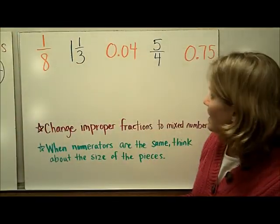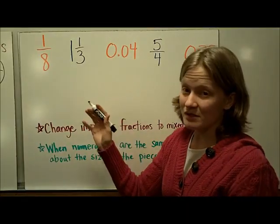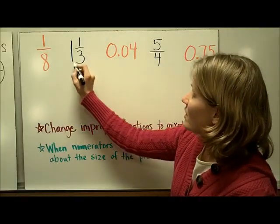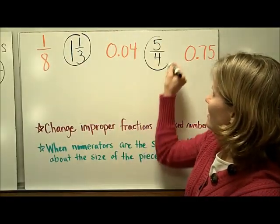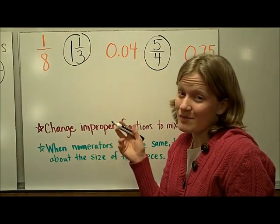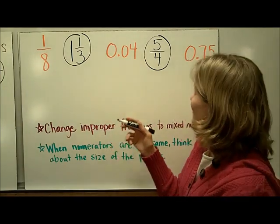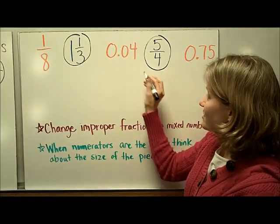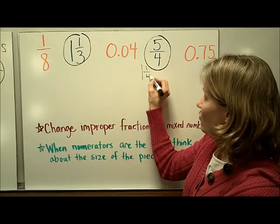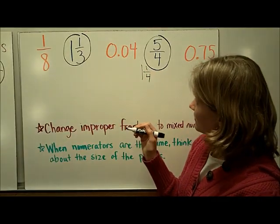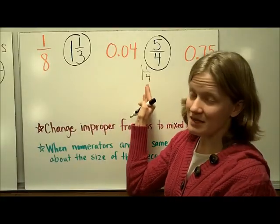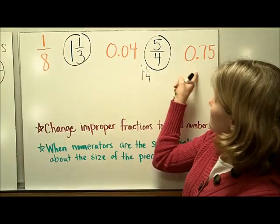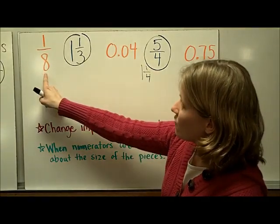Here's another set. I'm going to use the same strategy and look for any fractions or decimals that are bigger than one whole. Here's one and here's one. But this improper fraction is kind of hard to deal with, so I'm going to think about what it is as a mixed number. Five fourths — if I pull out four fourths to make a whole, that leaves me one whole with one fourth remaining. Now I'm going to come back to these and put them in later. I have two decimals and one more fraction.